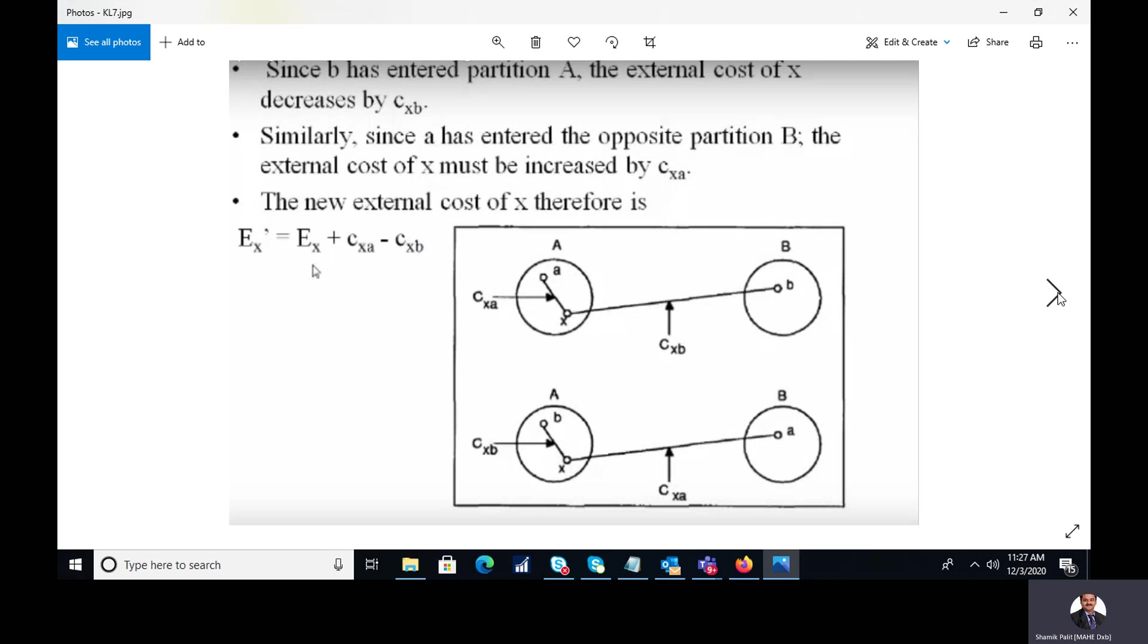Because we can say that as long as the external cost is concerned, while A will move to cluster B, so it will increase by Cxa. And at the same point of time, if I consider xB, so as xB is coming to the cluster A, so it will get reduced by Cxb. So thus the formula becomes Ex plus Cxa minus Cxb.